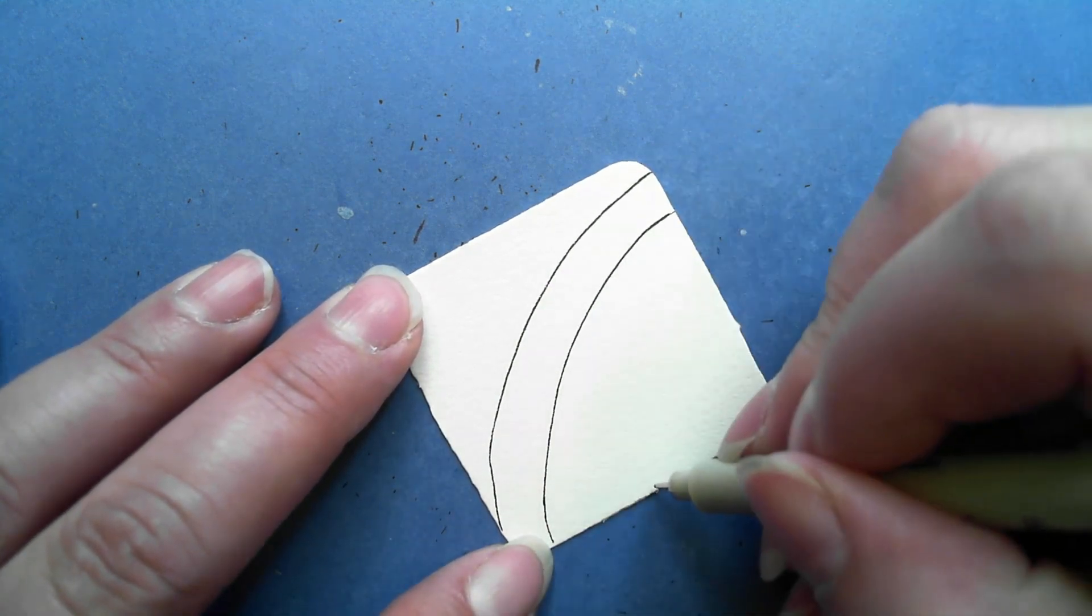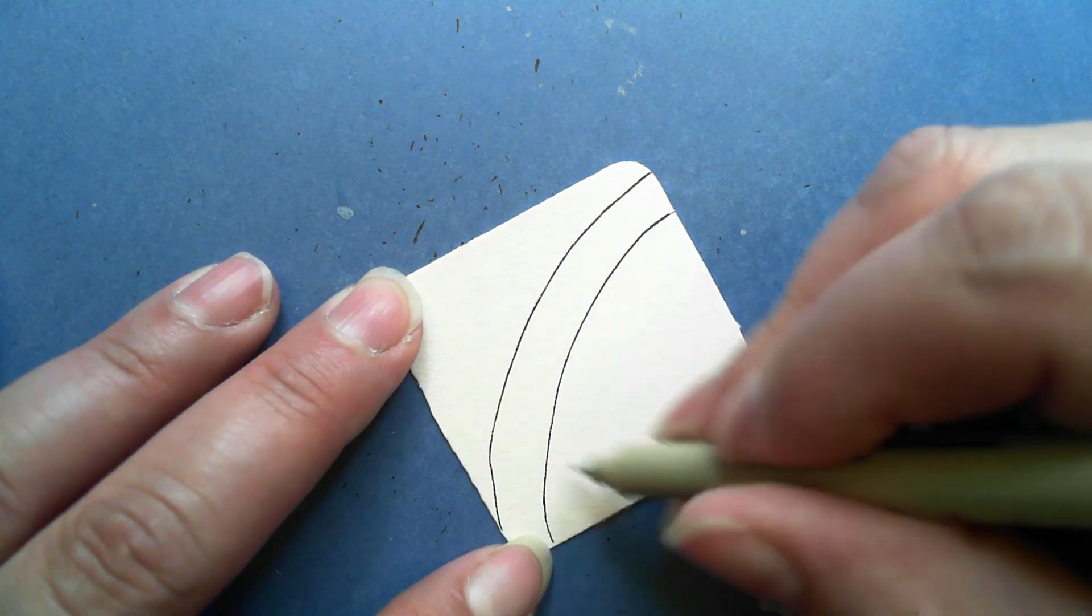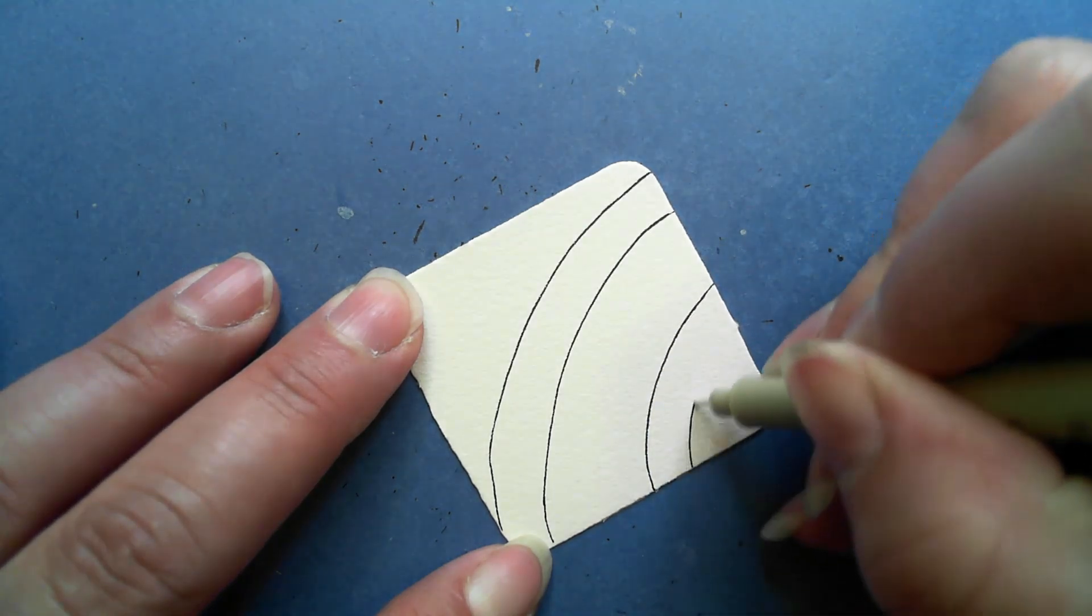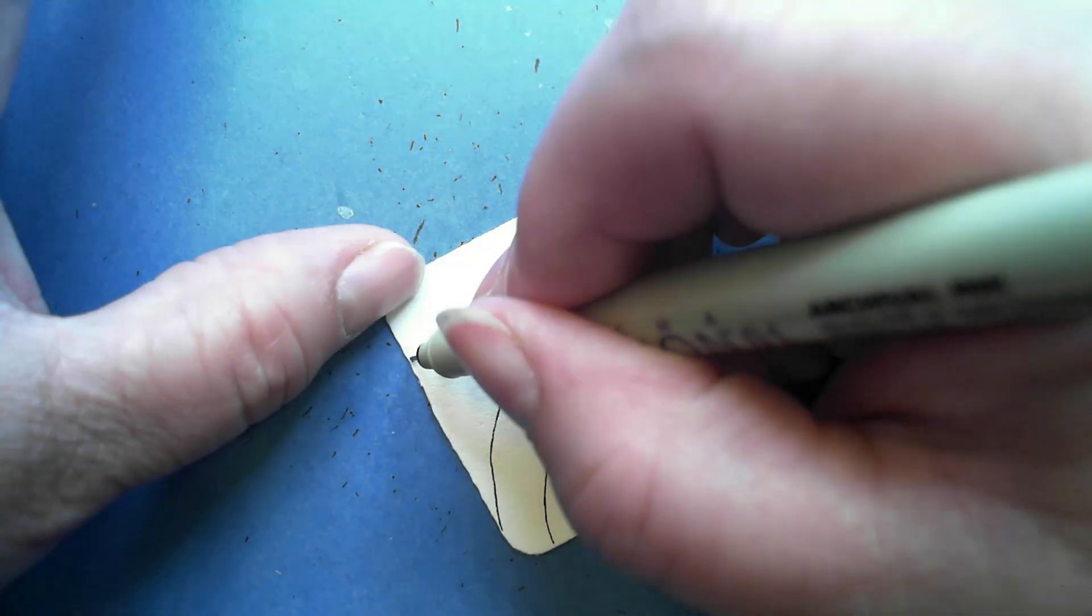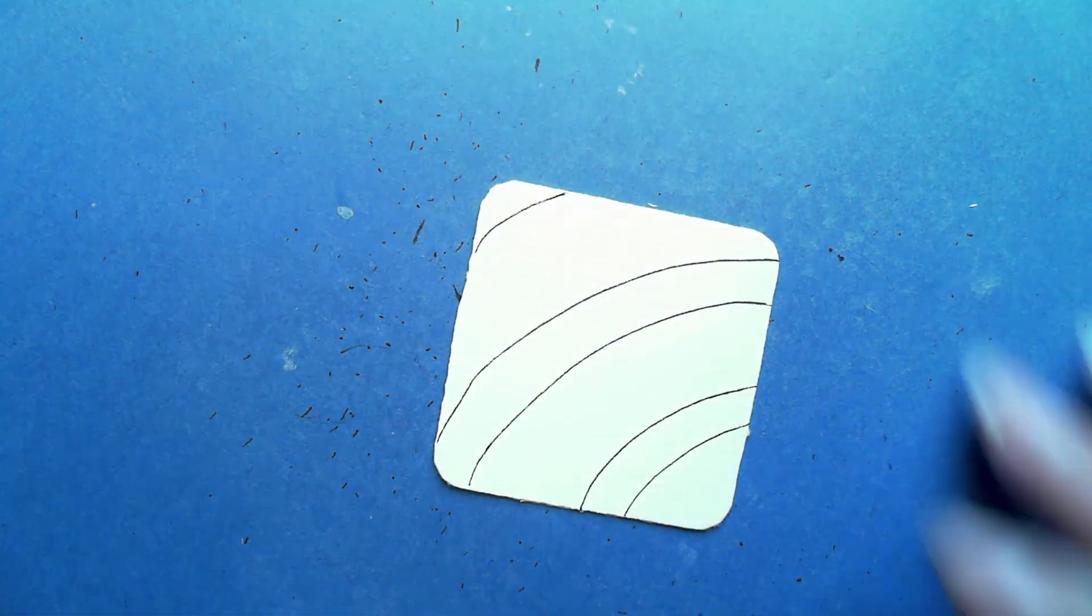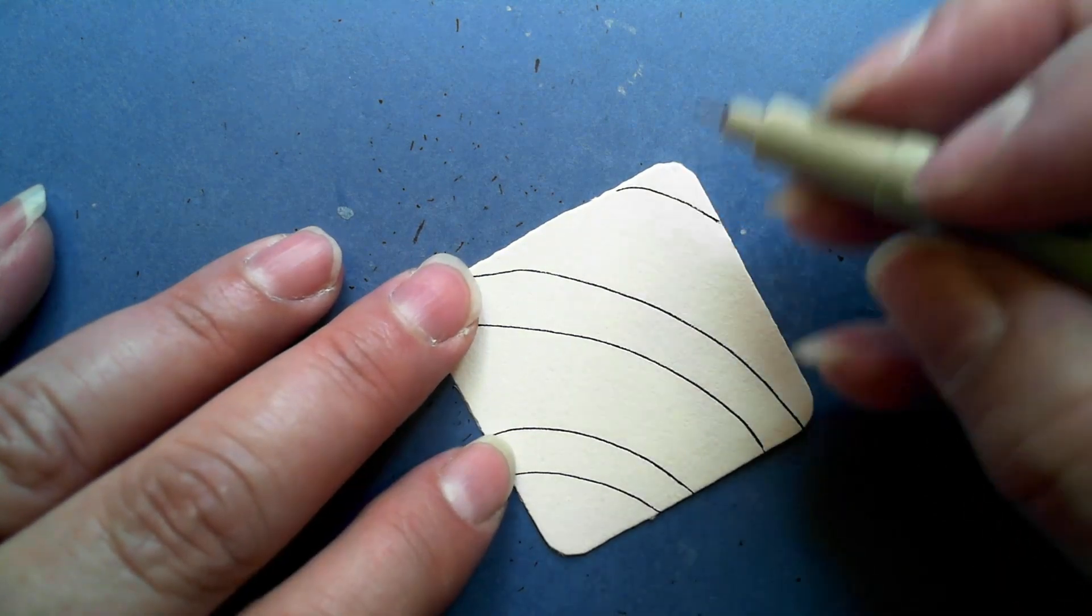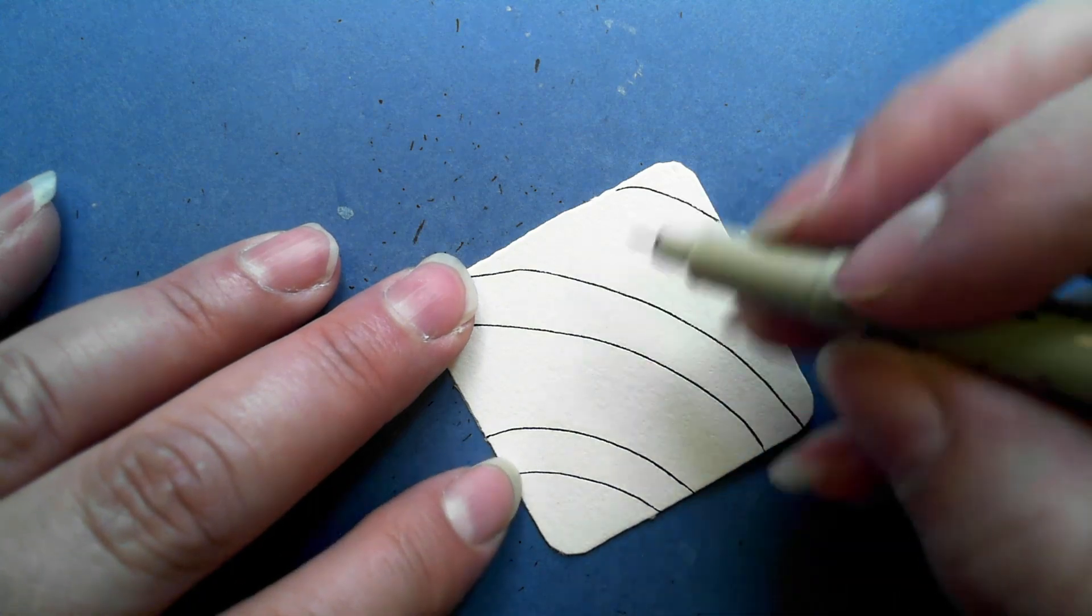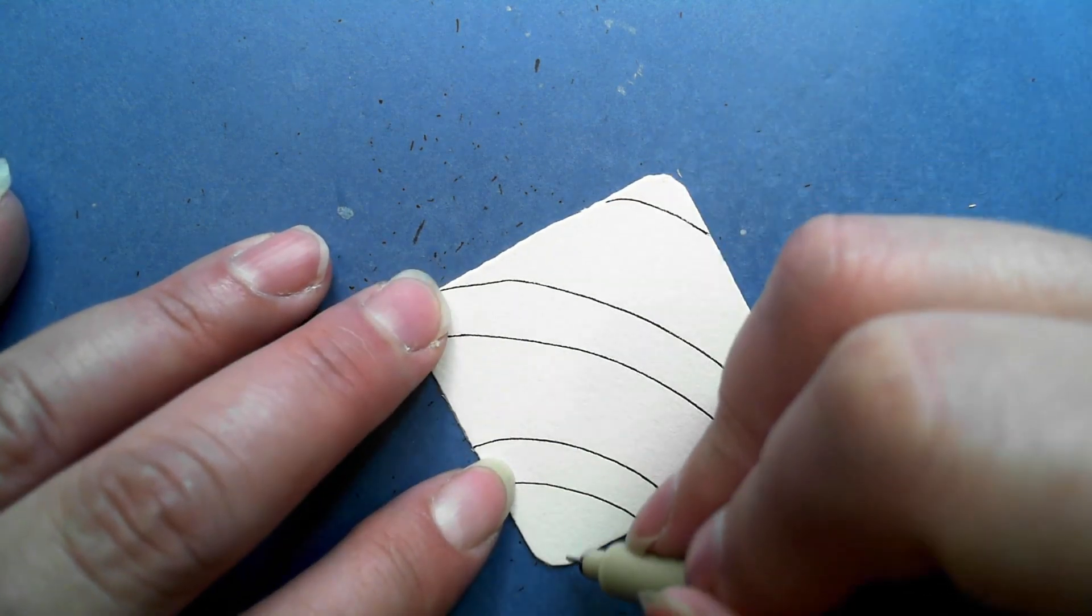So what we want to have is sets or pairs of lines that are sort of close together, but then separated by a larger area. I'm going to create two more lines separated by a little bit greater distance like so.